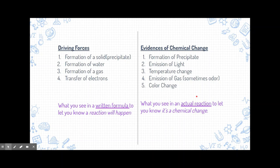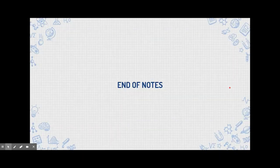Evidence of chemical change is what you see physically when doing a reaction to know a chemical change is taking place. Some overlap exists — like formation of a precipitate or emission of a gas — but they mean different things. A driving force is something you see in a written formula; evidence of chemical change is something you see in an actual reaction. That's the end of notes. Good luck.